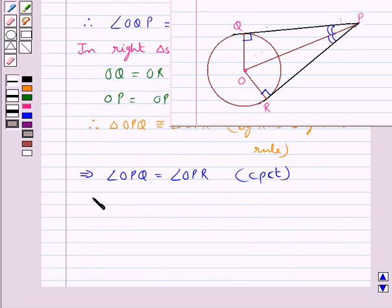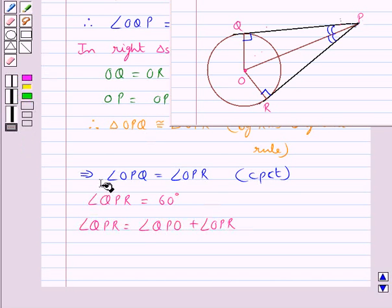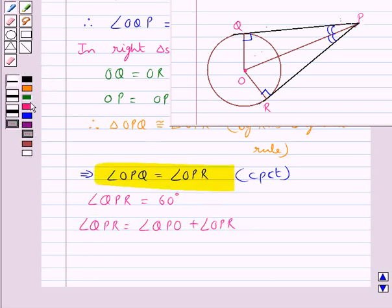It is given to us that angle QPR is equal to 60 degrees, and we know that angle QPR is equal to angle QPO plus angle OPR, and both these angles are equal.